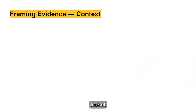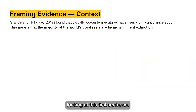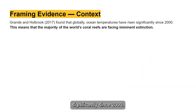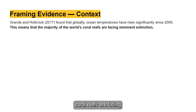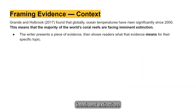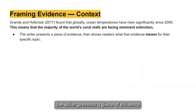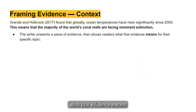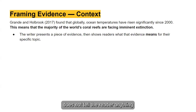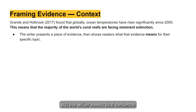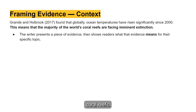Let's look at some examples of contextualizing evidence. Looking at this first sentence: "Brande and Holbrook found that globally, ocean temperatures have risen significantly since 2000. This means that the majority of the world's coral reefs are facing imminent extinction." The writer presents a piece of evidence and then shows readers what it means for their specific topic. Without the second sentence, the evidence doesn't connect to the writer's topic of coral reefs.